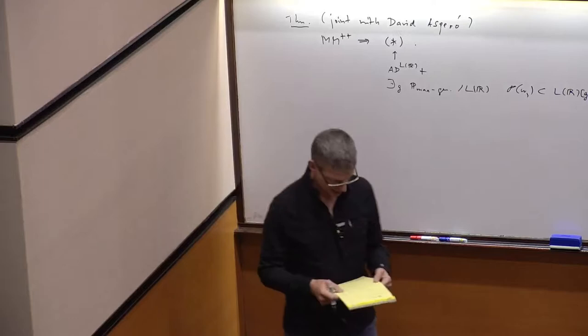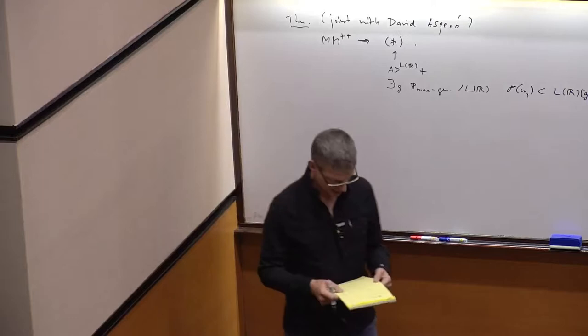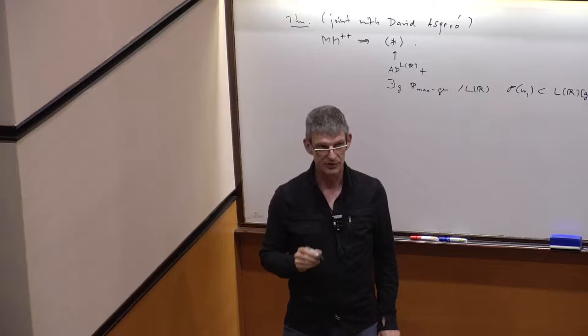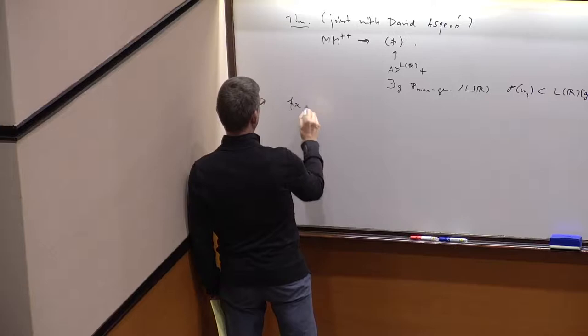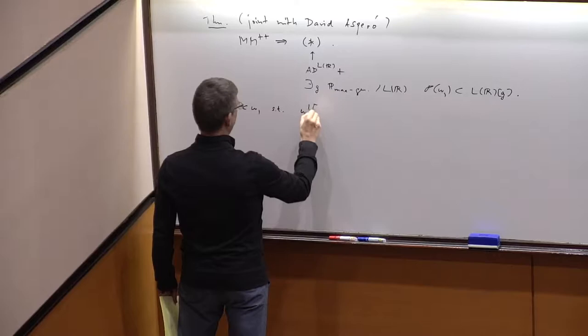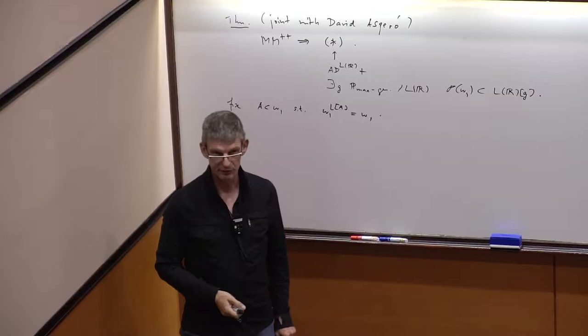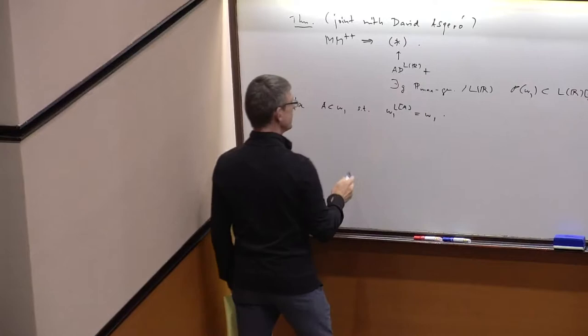Now, what about the other part? Throughout the talk I will fix a subset of ω₁ which computes ω₁ correctly. So we fix once and for all an A ⊆ ω₁ such that the ω₁ of L[A] is the true ω₁, and then people have known for a while that there is a good candidate for the G you want to produce.